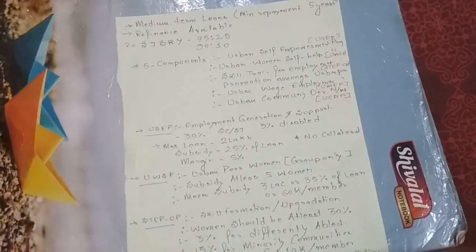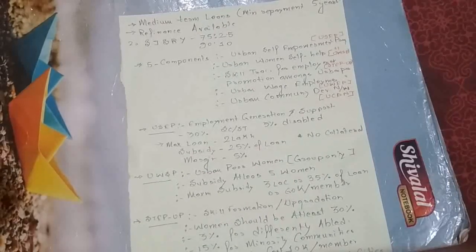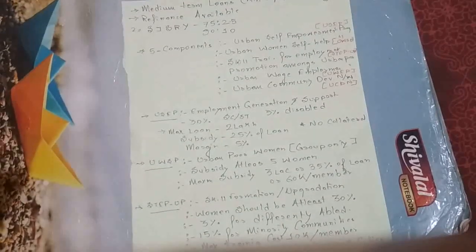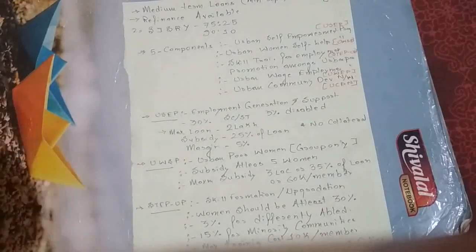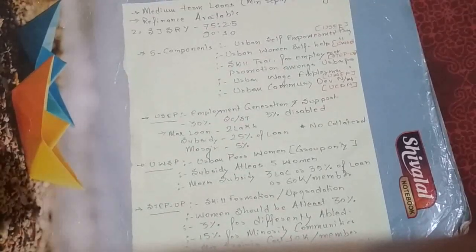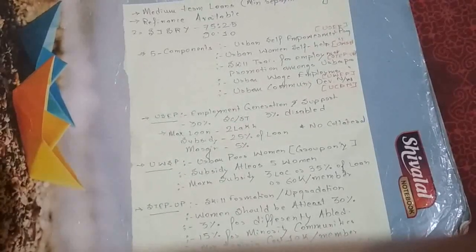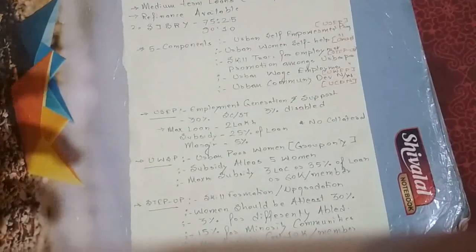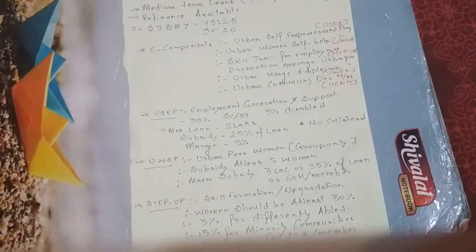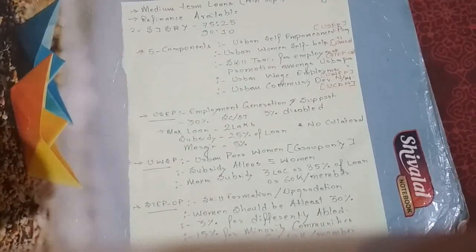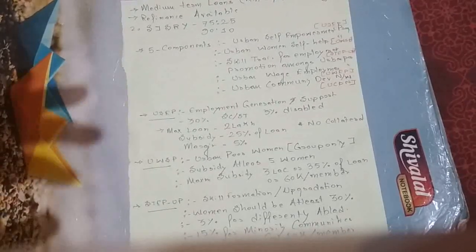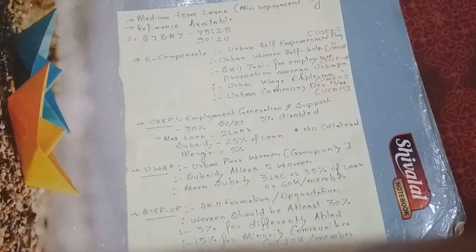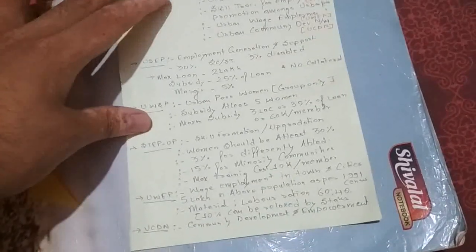UWSP — Urban Women's Self-Help Program — is for urban poor women only in groups; no individual assistance is given. For subsidy eligibility, the group must have at least five women. The maximum subsidy is 3 lakh, or 35 percent of the loan, or 60,000 per member, whichever is applicable under this component of Swarnajayanti Shahari Rojgar Yojana.